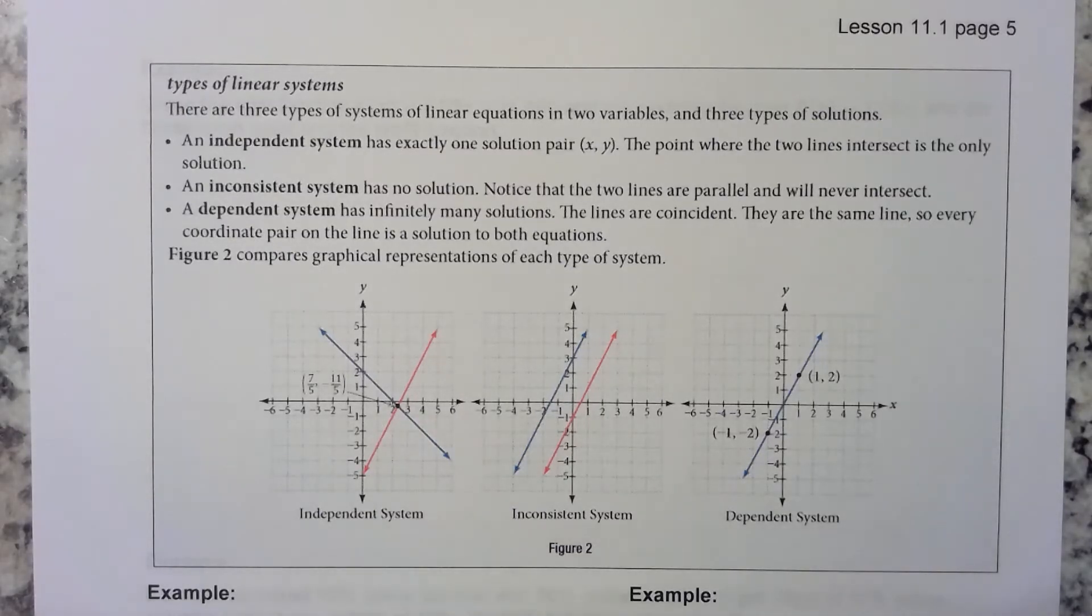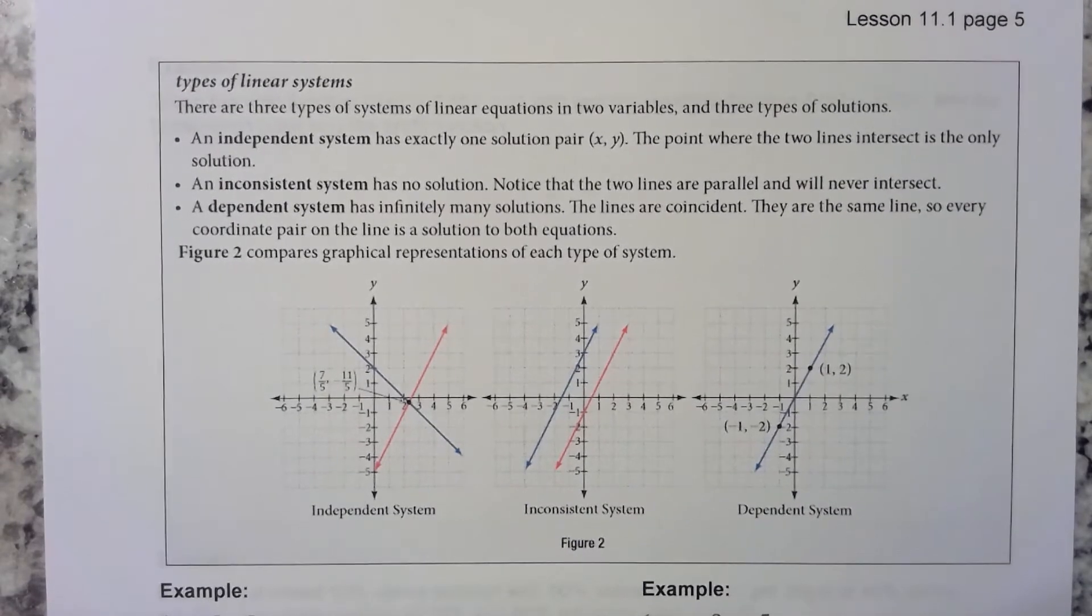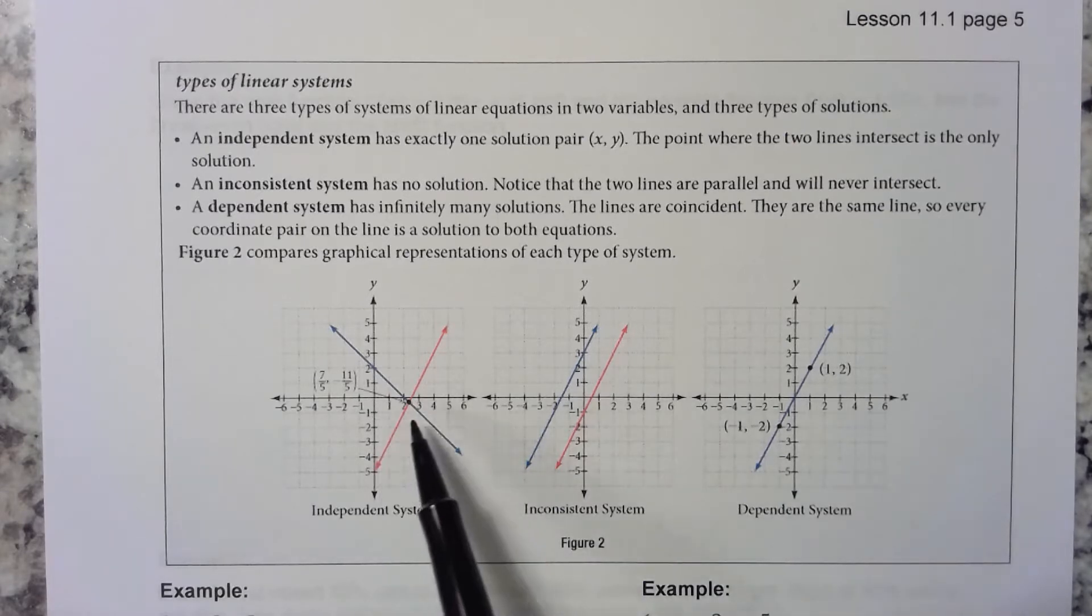There are three different types of systems whenever you're talking about linear systems. There are three different types of solutions that you can get. You can get one solution, which means the two lines intersect in one point. That is called an independent system.